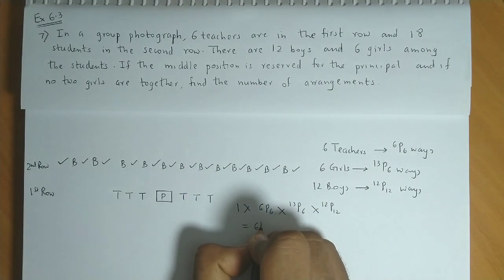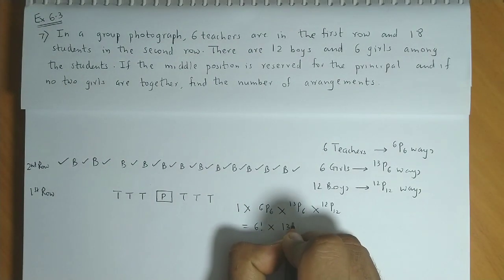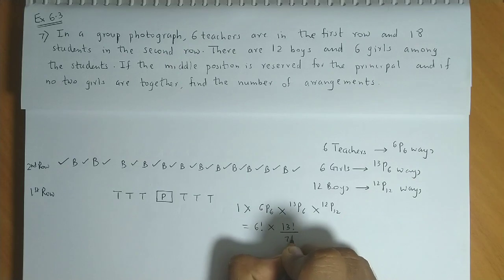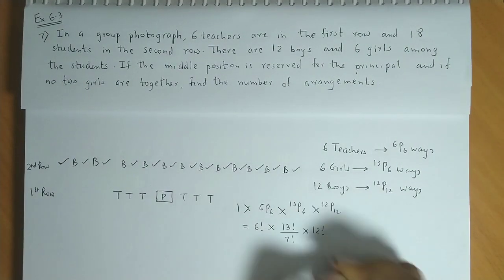Now, 6P6 hota hai 6 factorial. 13P6 is 13 factorial upon 7 factorial. And 12P12 hai 12 factorial.